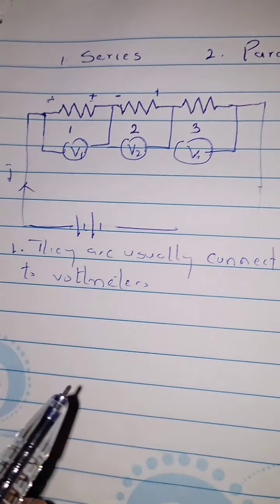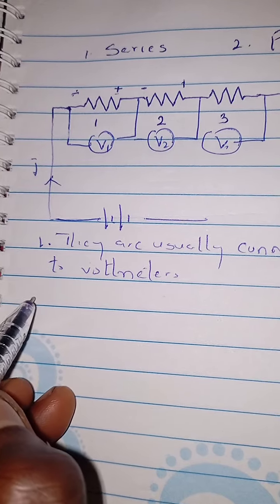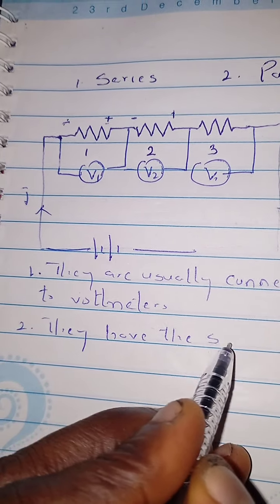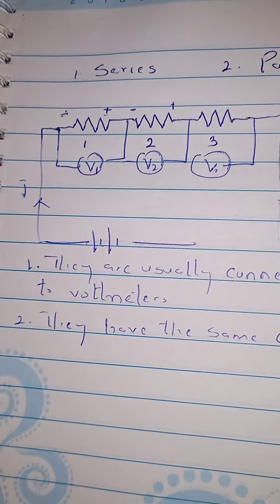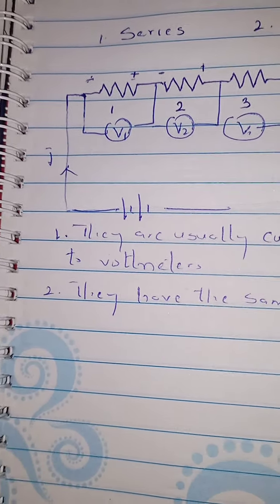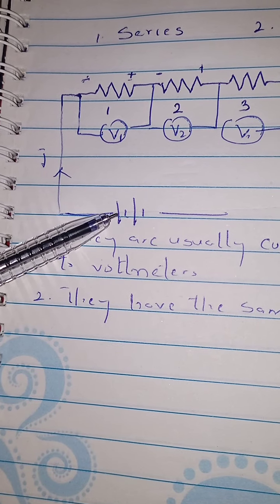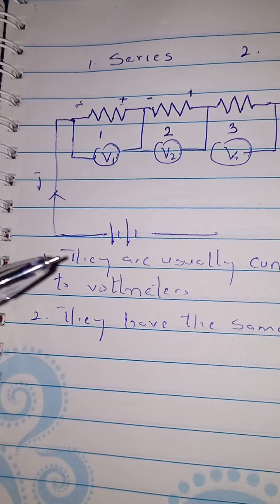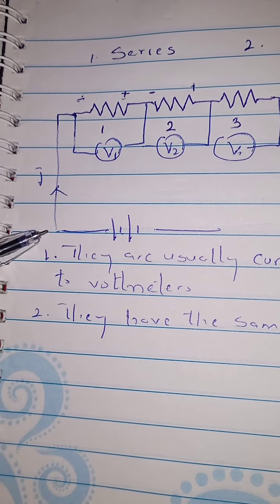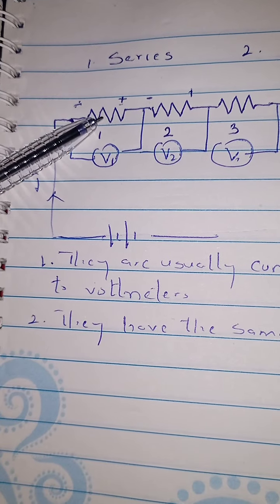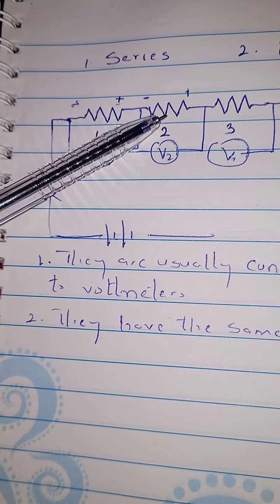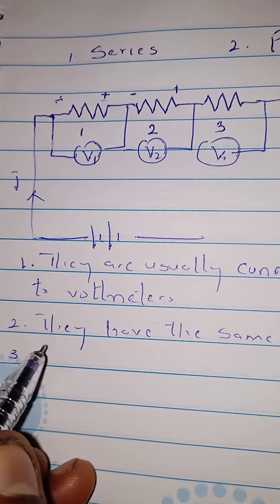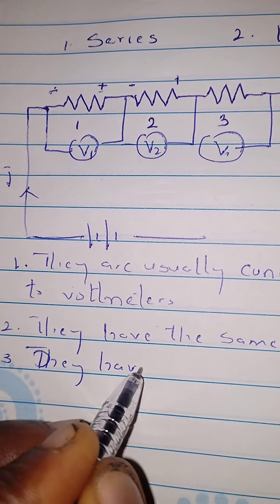Whenever resistors are connected in series, they are usually connected in parallel with voltmeters. The same current flows from the cell or battery through resistor one, resistor two, and resistor three. For example, if 2 amps of current flows in the circuit, 2 amps will flow through resistor one, resistor two, and resistor three.